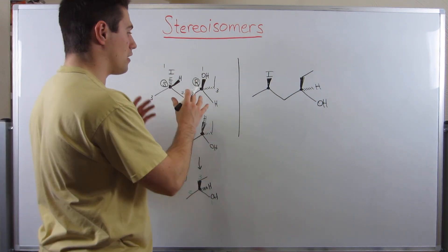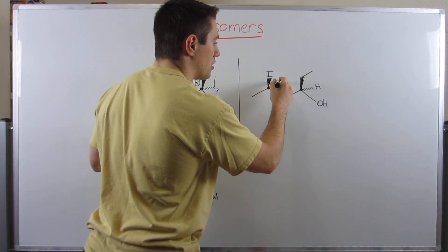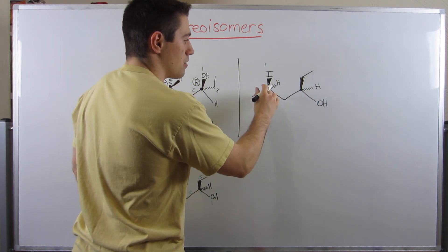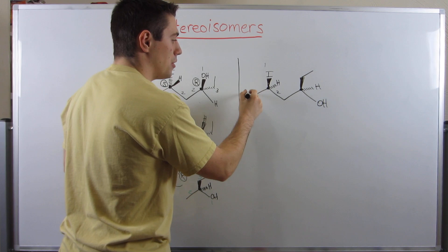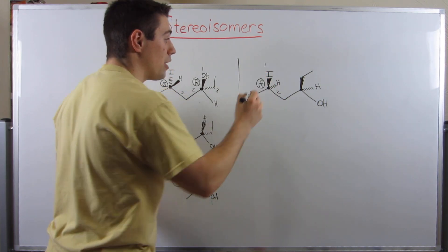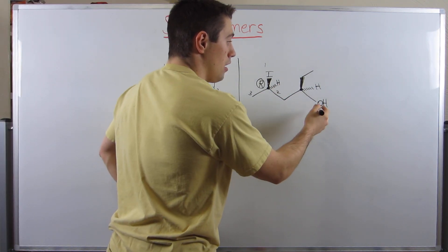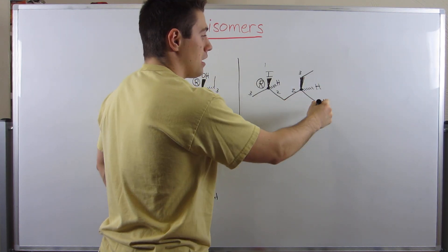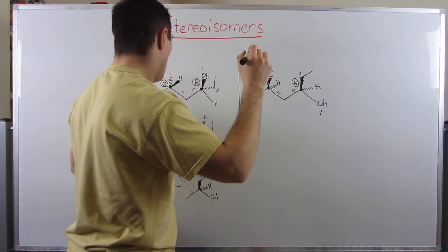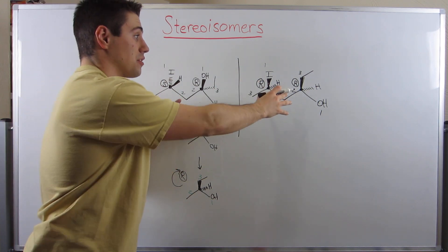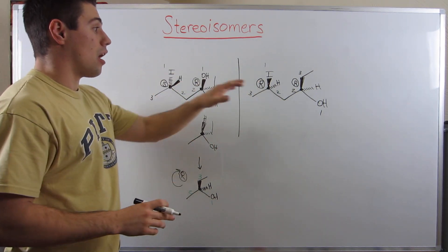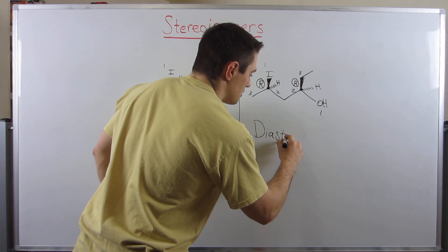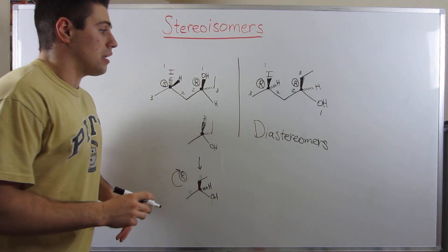Let's do it over here. It looks a little easier because we have our lowest priority group facing away from us at both stereocenters. Iodine gets number one, the rest of the chain gets number two, methyl group gets three. Looks like R, lowest priority group is away from us, it is R. Now let's try over here. OH group gets number one, the group over here gets a two, the group up here gets a three. It looks like R, and sure enough it is R. Again, they're not the same - they're different stereochemical outputs. And they're not opposite, so we don't have enantiomers. It's not the same. Again, this is a pair of diastereomers.